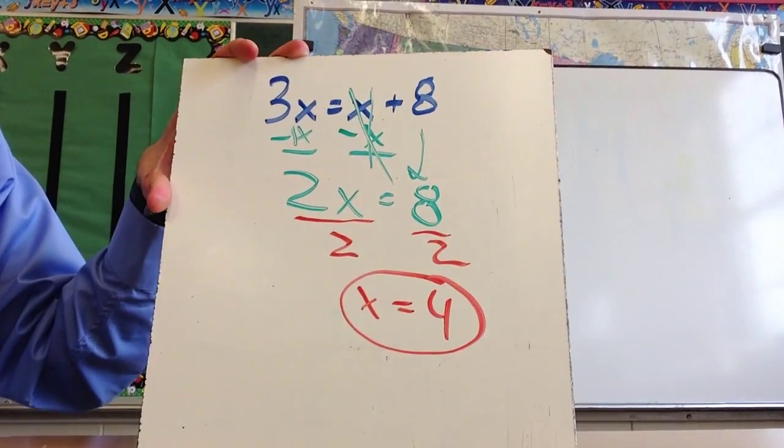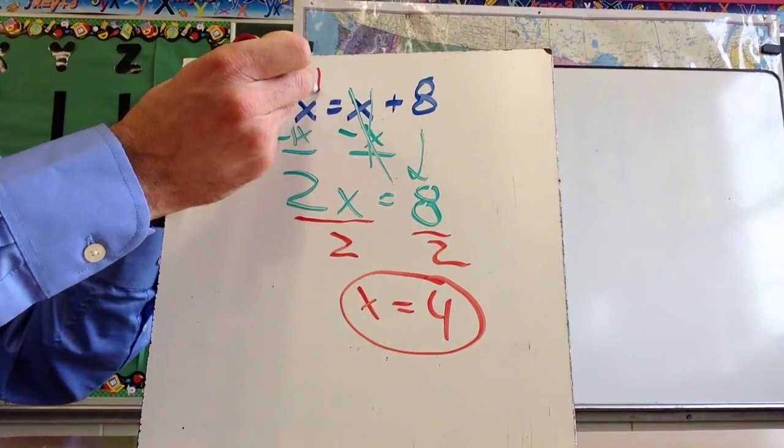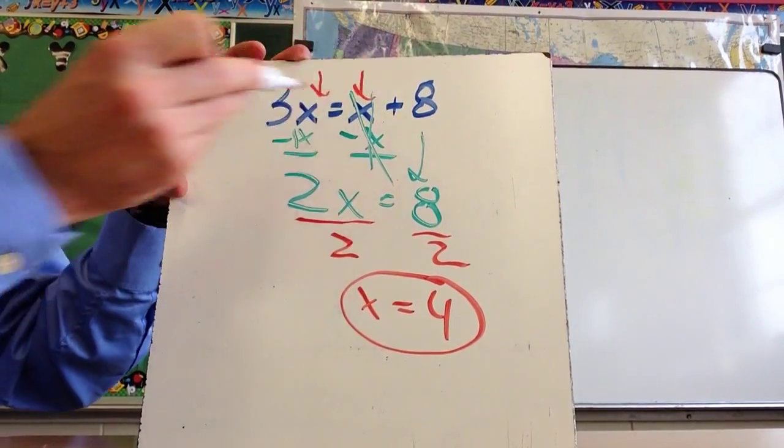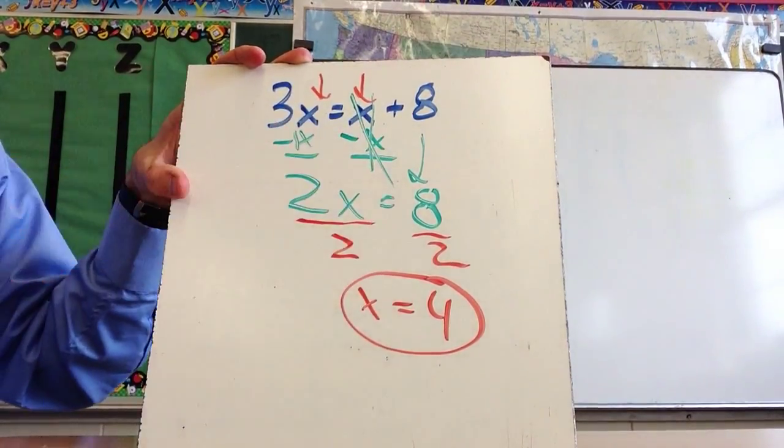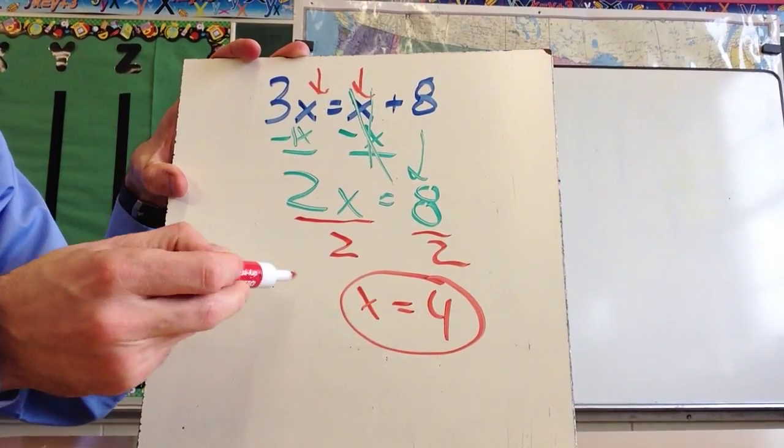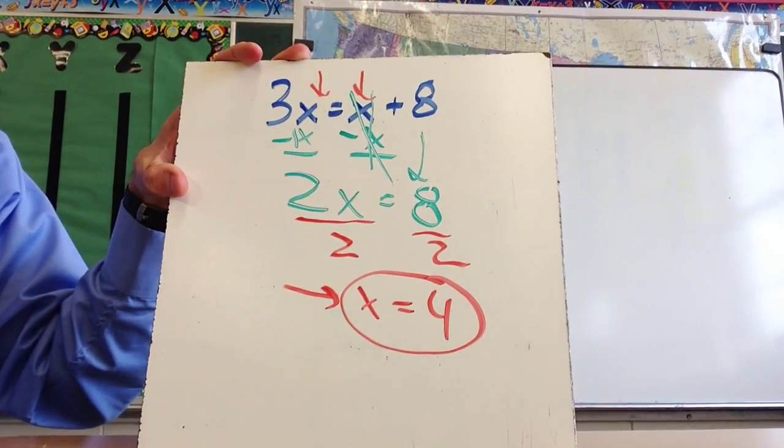Now I can check my answer if I want. Just remember that there are two places where I would need to substitute in this x. And so this is 3 times 4, which equals 12, and then 4 plus 8 equals 12, and since 12 equals 12, I know that this is my correct answer.